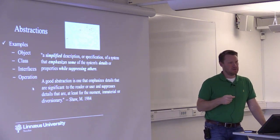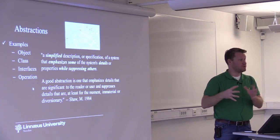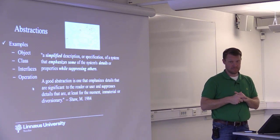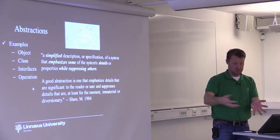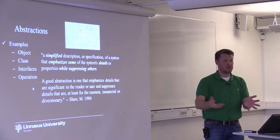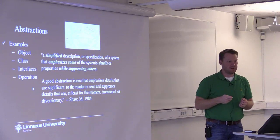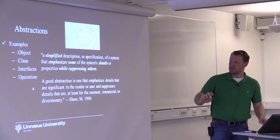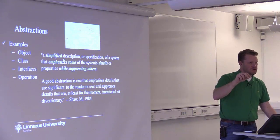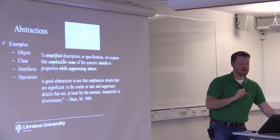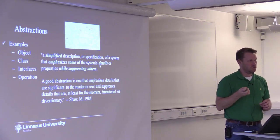An object is also a simplification. Objects typically represent real-world entities. However, these real-world entities have so many properties that it's infeasible and often not relevant for the problem to capture all of them. There's no benefit in having humongous objects that try to capture all properties of a real-world object. Instead, you provide a simplified description — the object is a simplification of the real-world object, an abstraction where we emphasize some details while suppressing others.